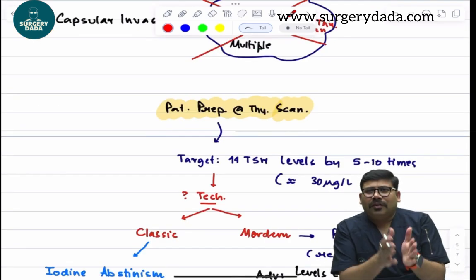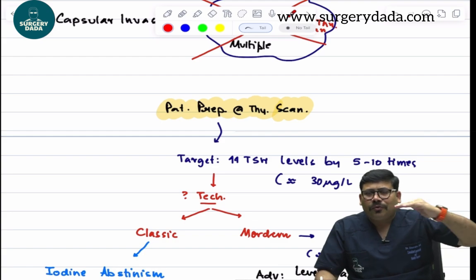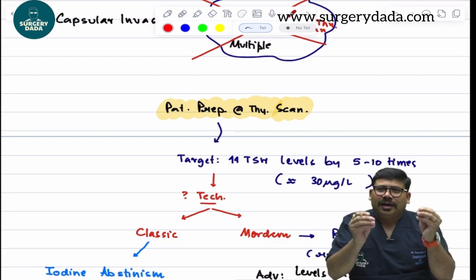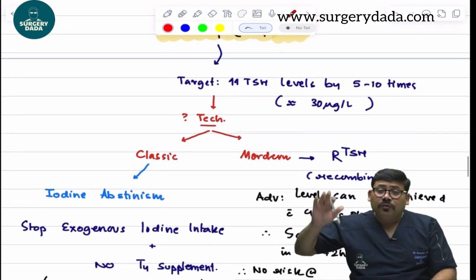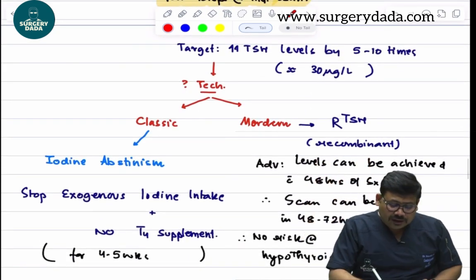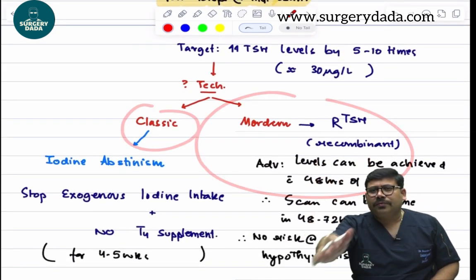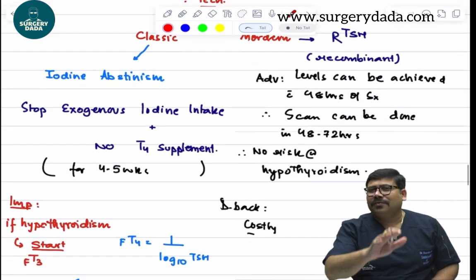What is the crux of thyroid scan? Whenever we are going for thyroid scan, we understand that we need to raise the TSH so that even the slightest tissue left over is stimulated. For that, we need to raise it 5 to 10 times. We have the classic way and modern way. Modern way: we give recombinant TSH.